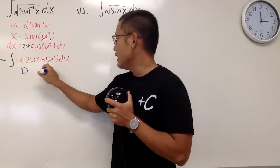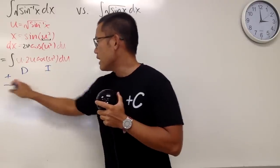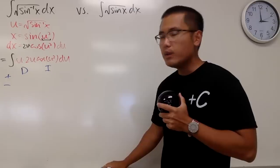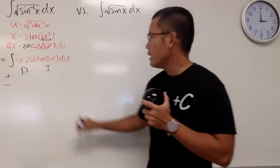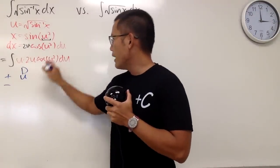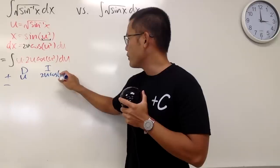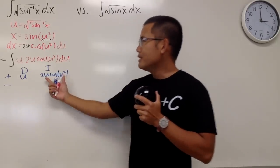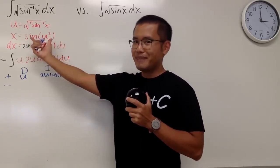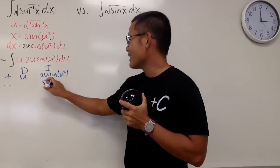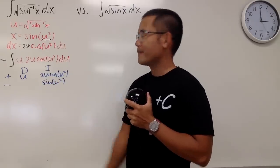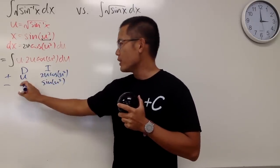So let me put down d and then i, plus minus on the side just to get ready, and we are going to get the following, differentiating u and integrating 2u cosine of u squared. This right here is just pretty much that. Yes, so we get sine of u squared, and if we differentiate the u, we get 1.